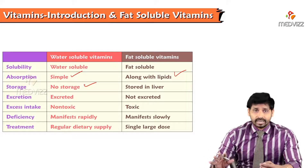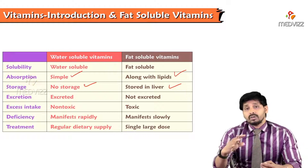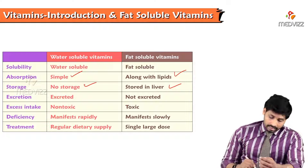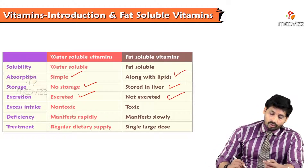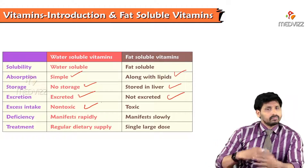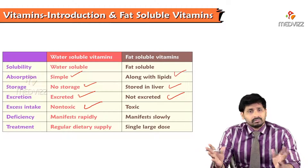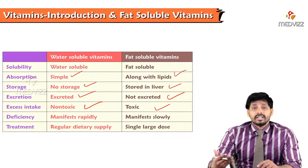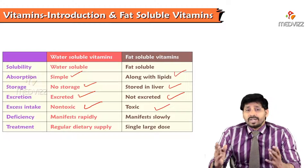Regarding storage: excess water-soluble vitamins are not stored in the body — they are simply excreted. Fat-soluble vitamins, however, when taken in large quantities, are stored in the body, especially in the liver. Because water-soluble vitamins are readily excreted, there is no hypervitaminosis or toxic effect from excess intake. But excess fat-soluble vitamin intake can cause toxic effects, known as hypervitaminosis.